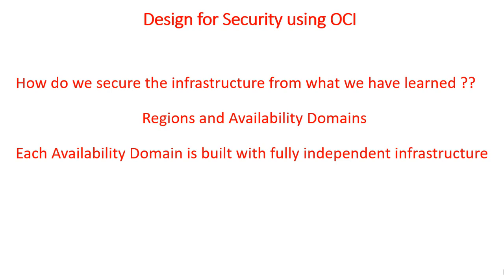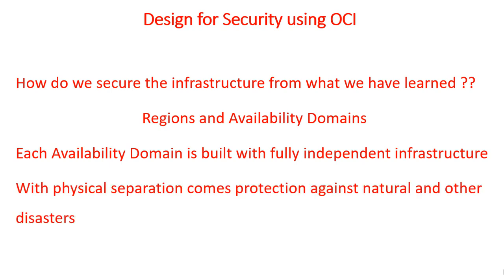Each availability domain is built with fully independent infrastructure. If you were to lose one data center, you could fall back to another to keep your business going. With physical separation comes protection against natural and other disasters. Availability domains within the same region are connected by a secure, high-speed, low-latency network, allowing customers to build highly reliable applications and workloads with minimal latency impact. All links between these data centers are encrypted, so as a customer you don't have to worry — Oracle infrastructure takes care of that.